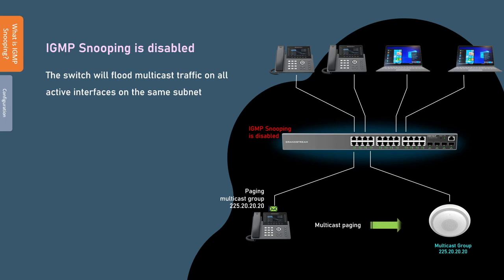This is an example of what happens when IGMP snooping is disabled on the switch. When an IP phone wants to page an IP intercom over multicast, the switch will flood the multicast traffic on all active interfaces in the same subnet, which leads to generating unnecessary network traffic. Even the devices that are not interested in the multicast traffic will have to receive and process it.